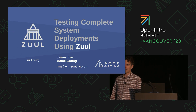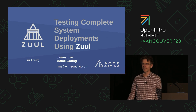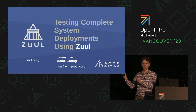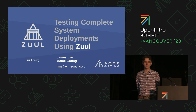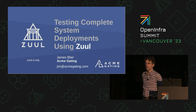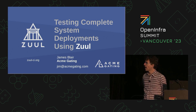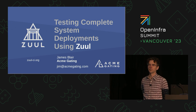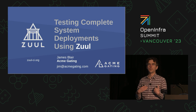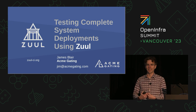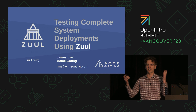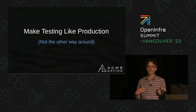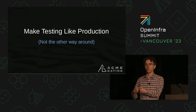My name is James Blair. I started the Zool project and I'm the current project lead. I have a business called Acme Gating which supports Zool, helps enterprises run it, does custom development consulting, that sort of thing. I also volunteer my time as part of the OpenDev infrastructure team, so I help run the Zool that OpenStack uses for its development — the Gerrit and those systems.